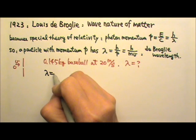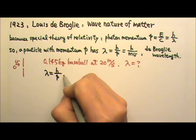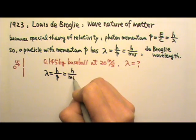The wavelength is h over momentum, which is h over mv.